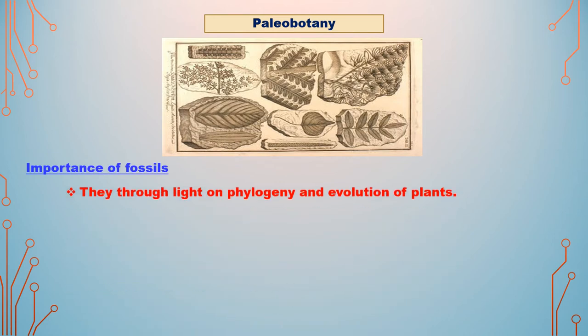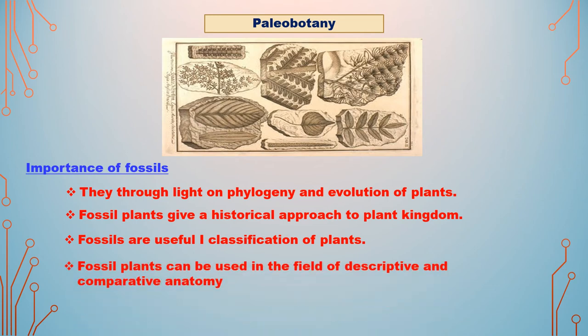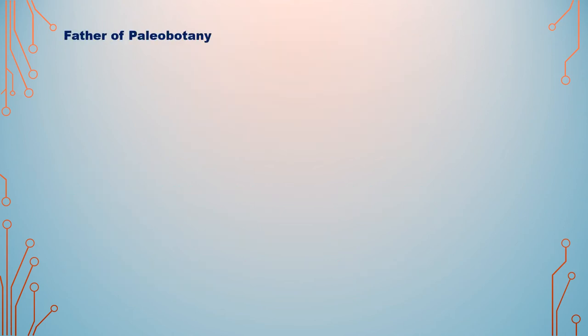Importance of fossils: they throw light on phylogeny and evolution of plants. Fossil plants give a historical approach to the plant kingdom. We can historically understand the types and growth of plants with the help of fossils. Fossils are useful in classification of plants. Fossil plants can also be used in the field of descriptive and comparative anatomy — the structure of plants and function of organs can be studied easily with the help of fossils.